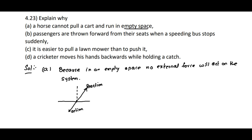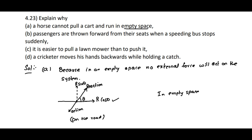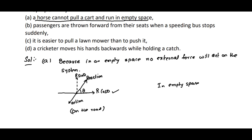If we resolve this reaction into two components: parallel to the ground, say R cos θ, and vertically, R sin θ. So R cos θ will help the horse to pull the cart if a medium is present, that means if it is on the road. But in empty space, there is no reaction at all. That is why the horse cannot pull a cart and run in empty space.